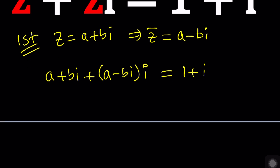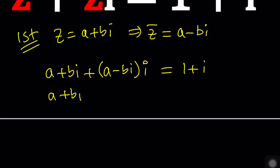Let's distribute and simplify. Don't forget that i squared equals negative 1 — i is the square root of negative 1, defined as the principal square root. When you distribute i, you get Ai, and Bi multiplied by i gives Bi squared with a minus sign. Since i squared is negative 1, that minus Bi squared becomes plus B.